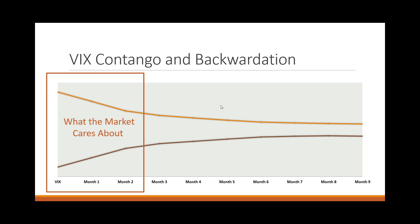The market is mostly focused on the front two months. Today, again, is January 15th. The January contract expires on the open on January 20th with the Martin Luther King Day holiday — it actually only has one trading day remaining and then an AM settlement, and the second month is February. The top curve, which represents backwardation, is kind of what we look like right now. VIX closed a tad above 27, the settlement for the January VIX futures contract was 26.475, and the February VIX futures contract went out at 24.35.